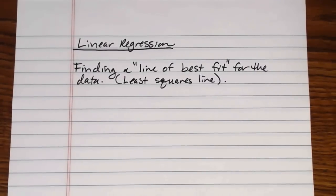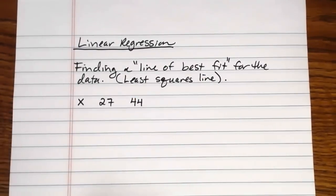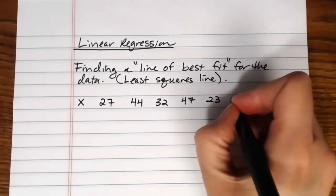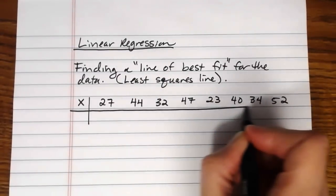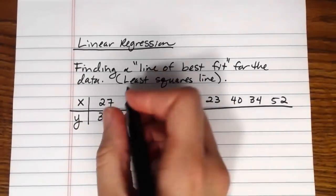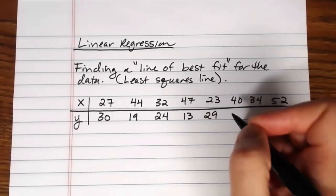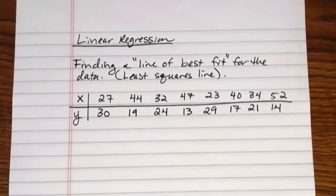So this is some data looking at comparing the weight of a car to the miles per gallon that that car gets. And so our x variable is the weight of a car in hundreds of pounds and so we have 27, 44, 32, 47, 23, 40, 34, and 52. So there's the weights of the car. And then the y variable here is representing the miles per gallon that the car gets so we've got 30 and then 19, 24, 13, 29, 17, 21, and 14.